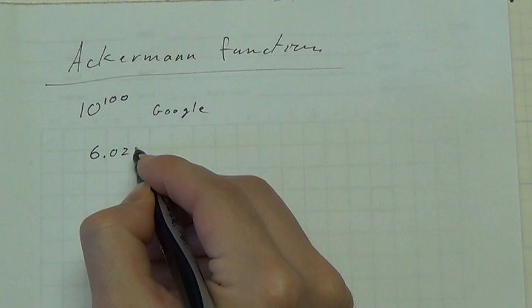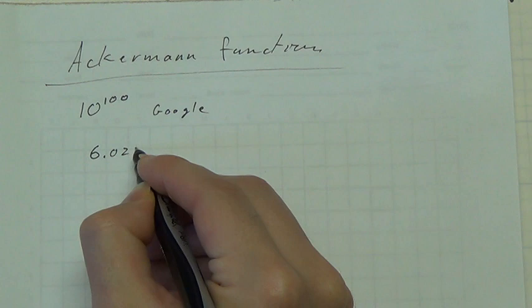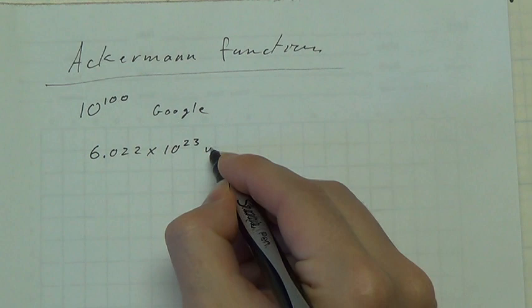you might know that there's approximately 6.022 times 10 to the 23rd, a mole. Units, a mole.